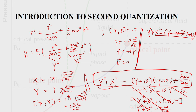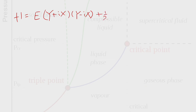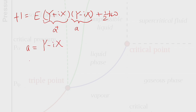So the Hamiltonian H looks like E times (Y + iX)(Y − iX) plus one-half ħω. I now call (Y + iX) the operator a-dagger and (Y − iX) the operator a. So a is Y minus iX and a-dagger is Y plus iX. The dagger denotes the Hermitian conjugate — the complex conjugate of the transpose — exactly as in quantum mechanics.